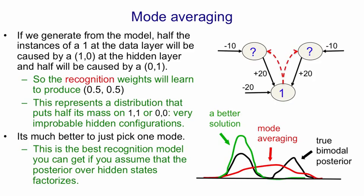So even though the hidden configurations we're dealing with are best represented as the corners of a square, I'll show it as if it was a one-dimensional continuous value, and the true posterior is bimodal — focused on 1, 0 or 0, 1, shown in black. The approximation we'll learn if we use the sleep phase of the wake-sleep algorithm is the red curve, which gives all four states of the hidden units equal probability. The best solution would have been to pick one of its states and give it all the probability mass, because in variational learning we're manipulating the true posterior to make it fit the approximation we're using. Normally in learning we're manipulating an approximation to fit the true thing, but here it's backwards.